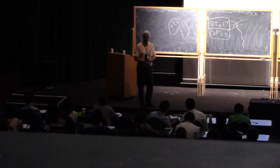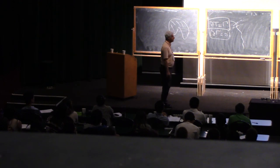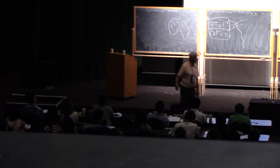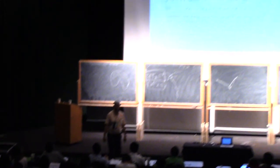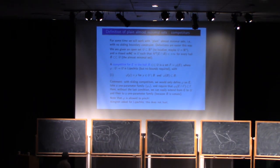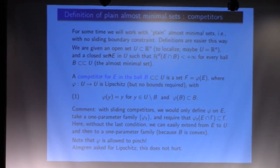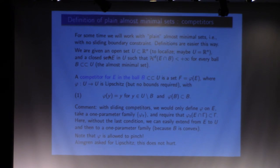Almost minimal sets make sense in this business. I will still inflict on you the definition so that it's done with for next day. I will do all the proofs without the boundary first — from time to time we'll say this proof works also when there is a boundary; when there is a boundary you just have to do more complicated proofs, but the idea is usually the same. So: no boundary.